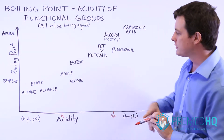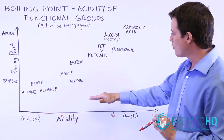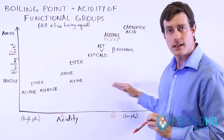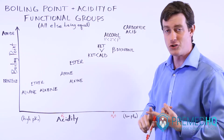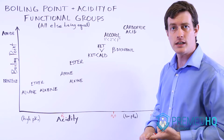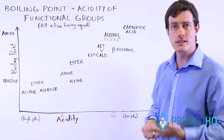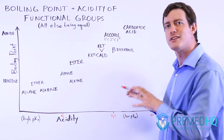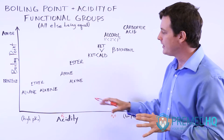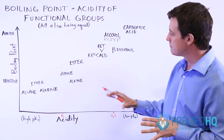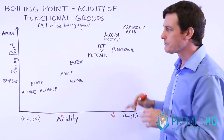Electron withdrawing groups also help promote acidity by withdrawing electrons within the structure so they're less likely to react. In general, something that is polar will be more acidic because a polar compound often has a place to put those electrons where they won't immediately grab back that proton. So the more polar the groups get, the more acidic they become. Electron withdrawing groups promote acidity, and resonance and conjugated systems promote acidity as well. In general, more polarity equals greater acidity.